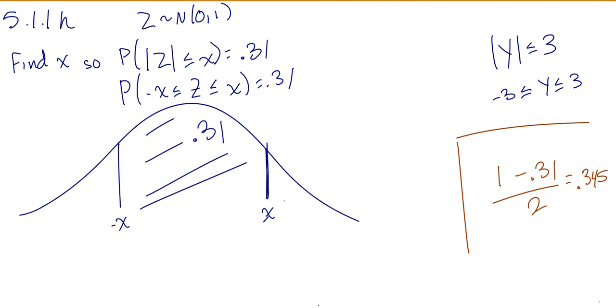So if there's 0.31 in the middle, that means there's 1 minus that is 0.69 total for both sides. Divide that by 2 and you get 0.345 in either side.